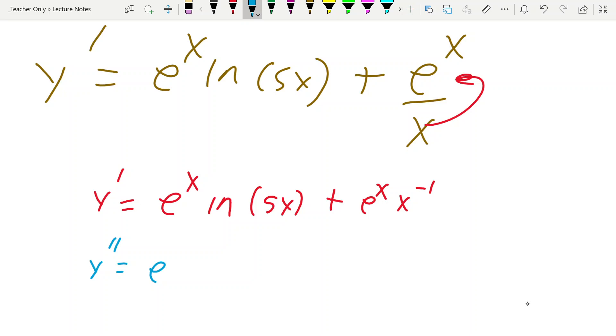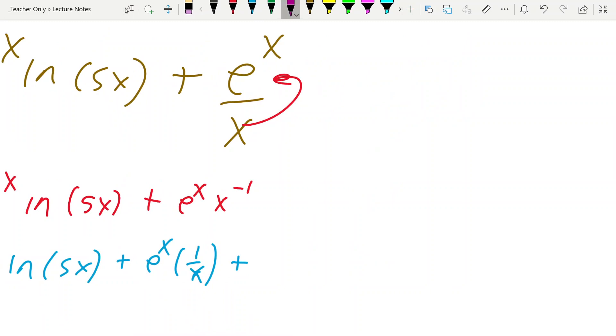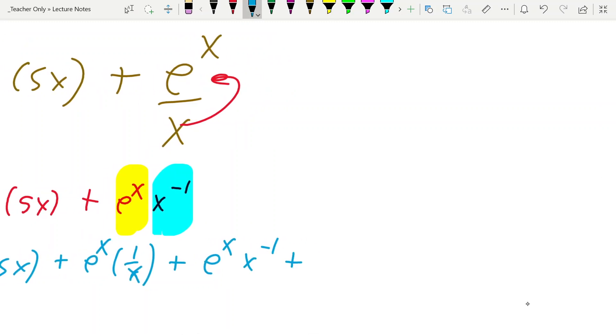So, this first term is identical to what it was. Do the derivative of e to the x, leave the natural log of x alone, plus, now, leave the e to the x alone, derivative of natural log, as we've already said, is 1 over x after simplification, plus, now, here we go. We're going to focus on this one. We have a product of e to the x times x to the negative 1. So, derivative of e to the x is e to the x, leave x to the negative 1 alone, plus, now, we're going to leave e to the x alone. The derivative of x to the negative 1 is we bring the negative 1 down to the front, x to the negative 2.